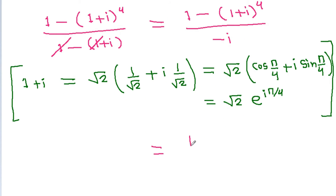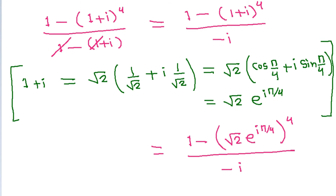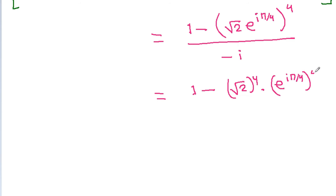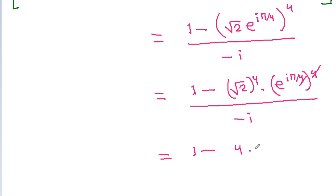Substituting back, we have 1 minus (root 2 times e^(i*pi/4)) to the power 4, divided by minus iota. This simplifies to 1 minus root 2 to the power 4 times e^(i*pi) divided by minus iota.